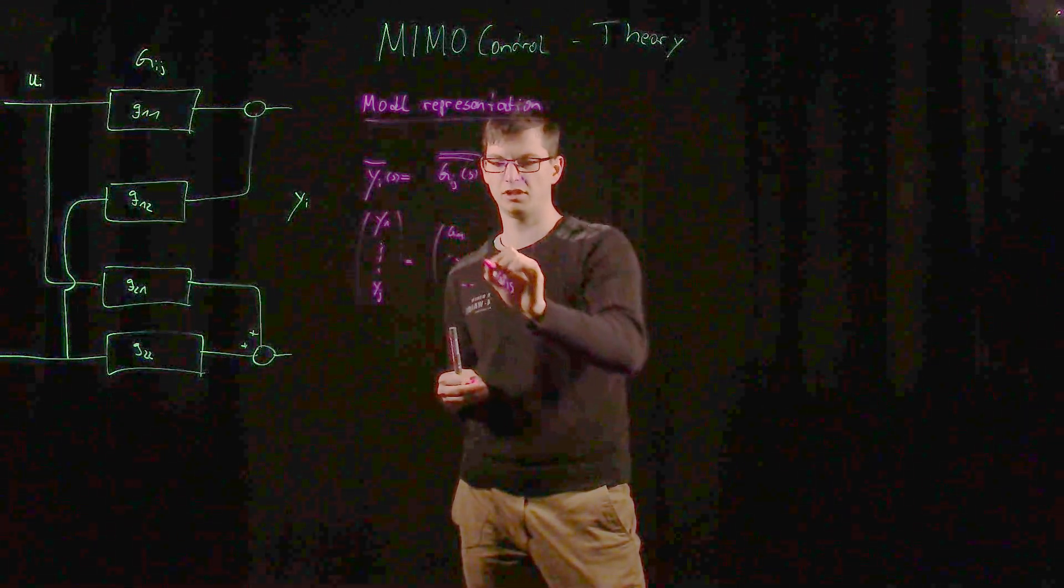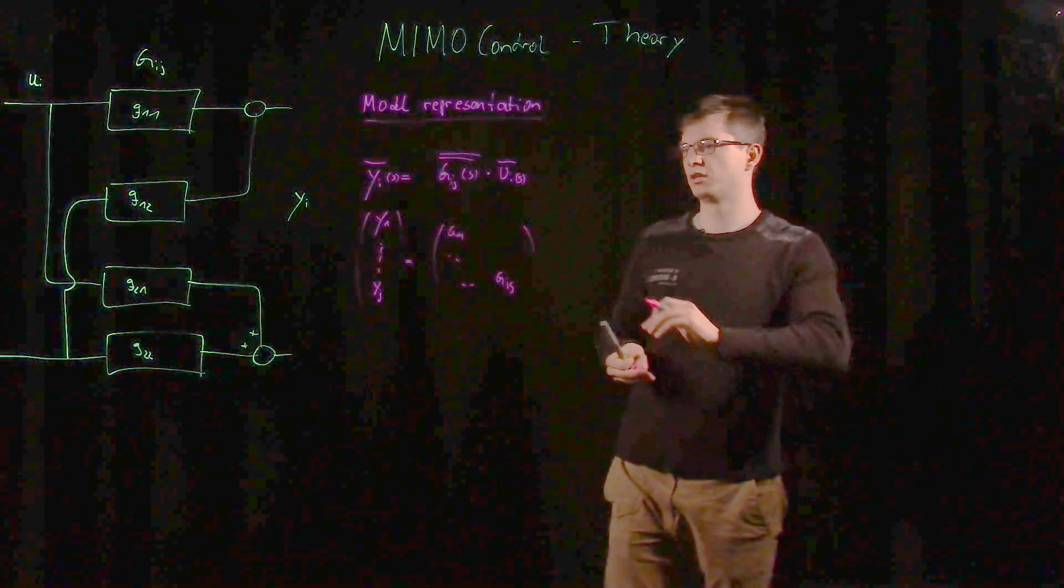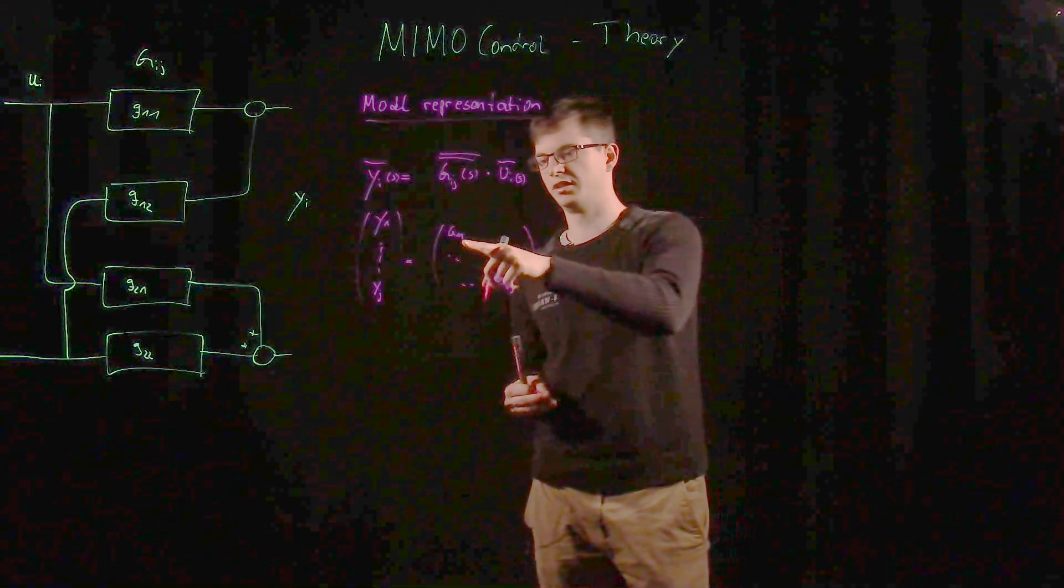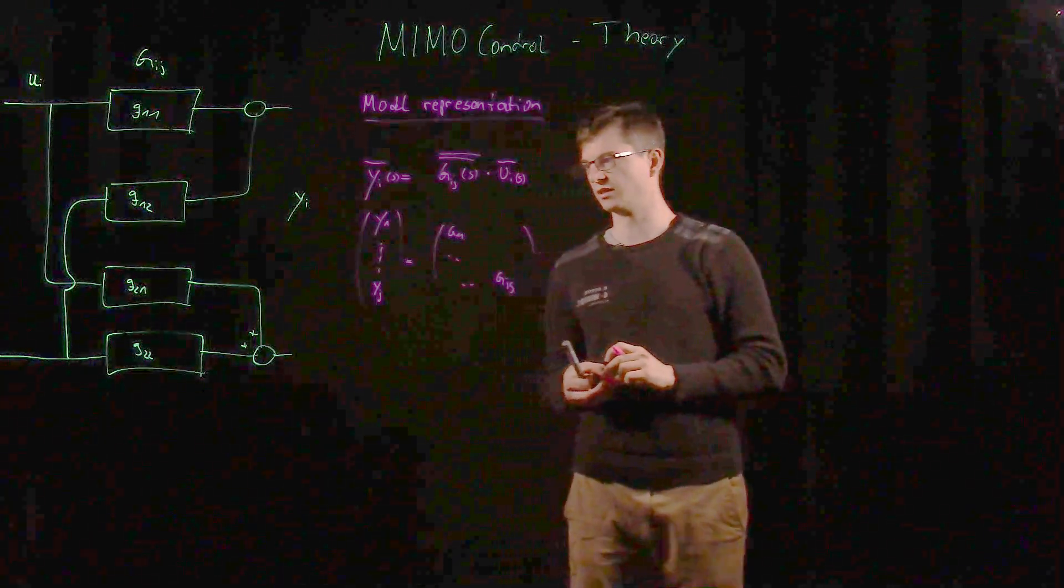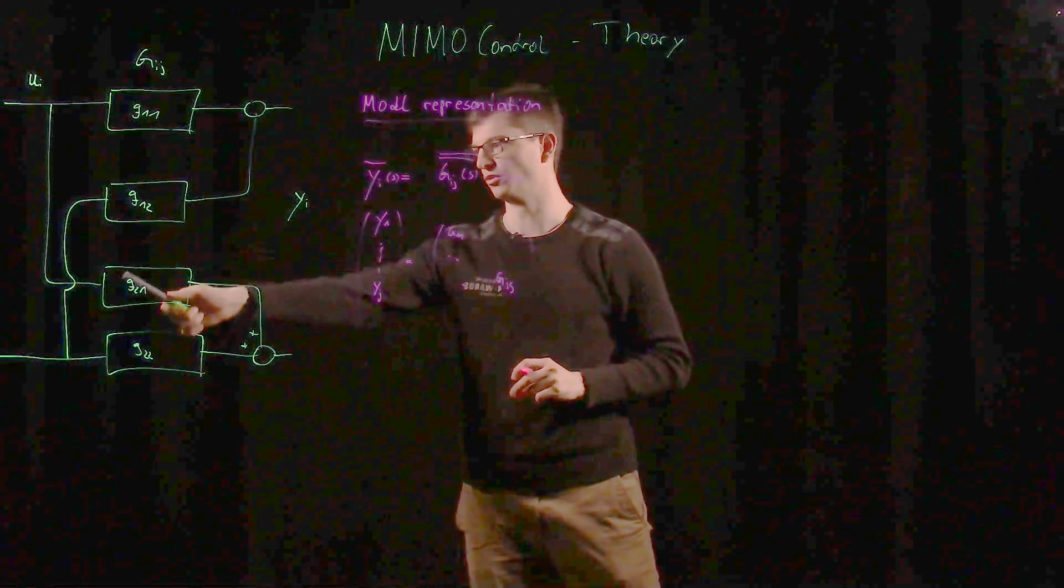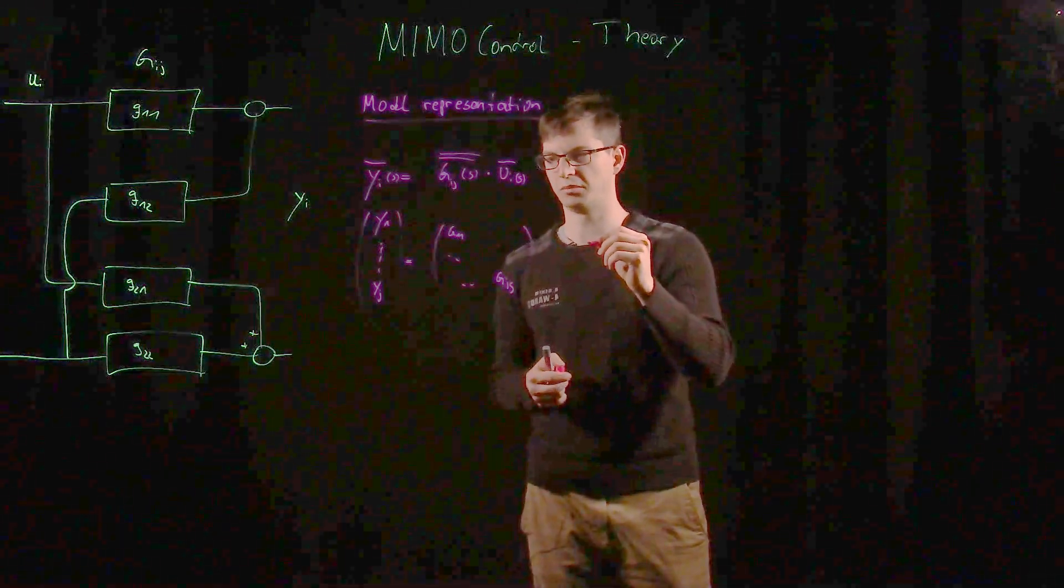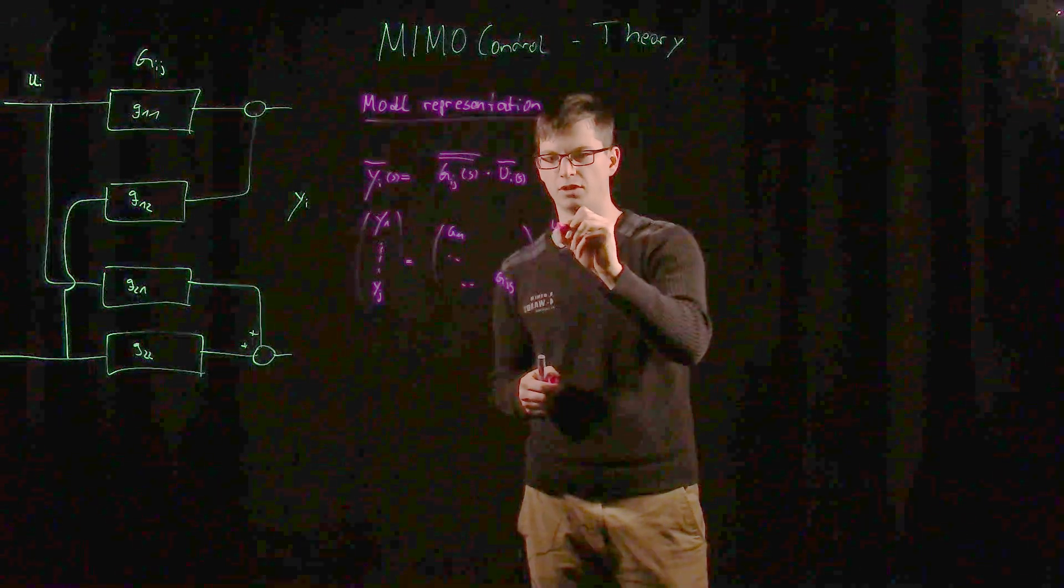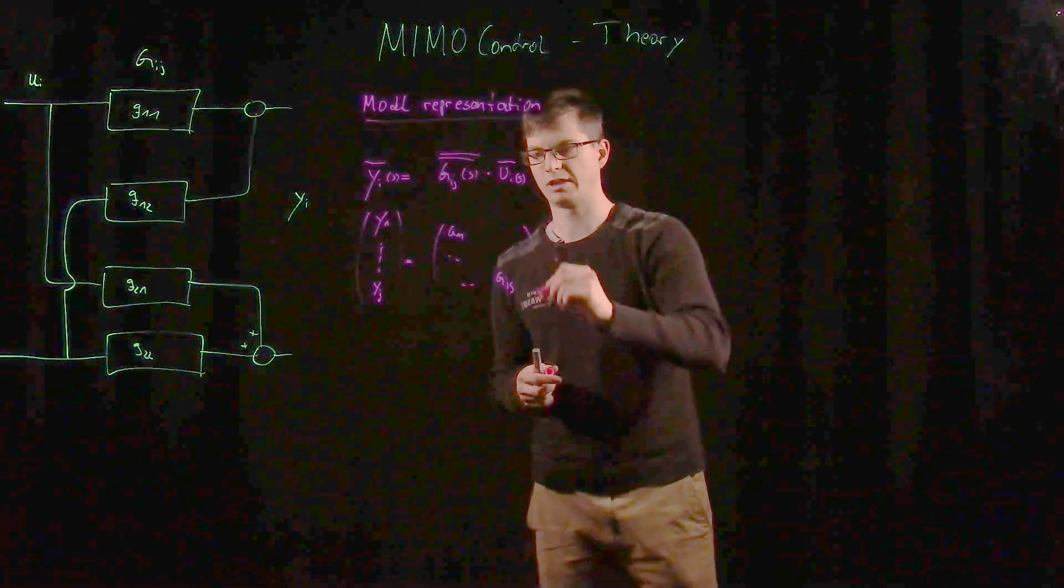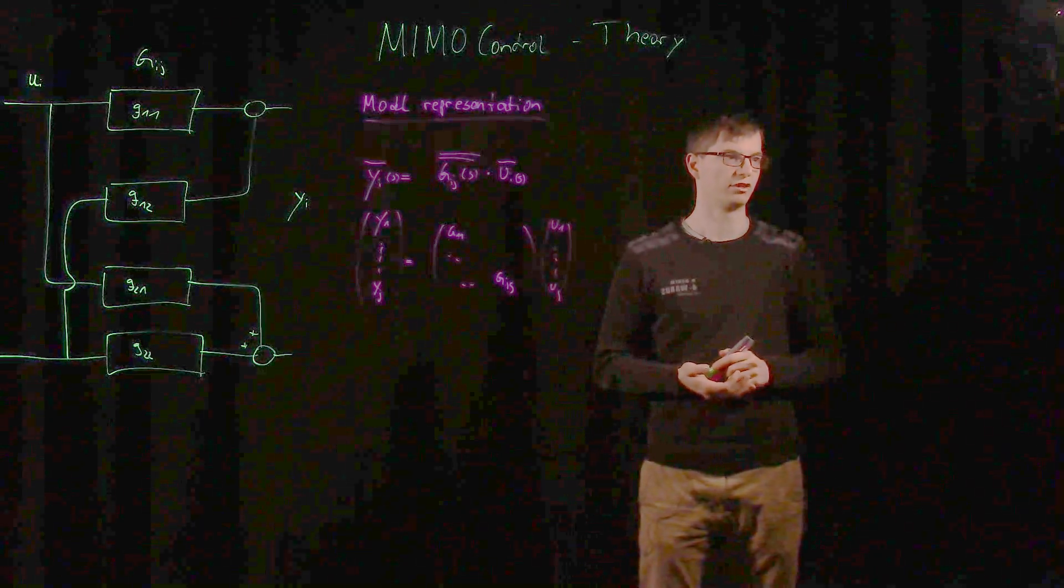Here, the interactions. In the diagonal points you would see the direct influence, so these would be the values of direct interaction. On the other parts you would see the coupled interactions, like g_1,2 or g_2,1. For u, the same as for y applies, so you would have u_1 and then u_j. That's actually your model representation and that's nothing too difficult.